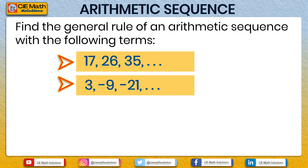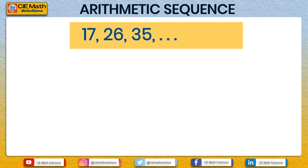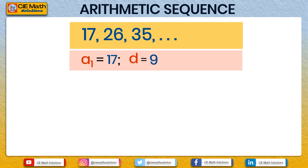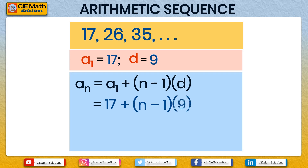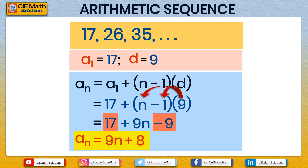Let us verify the answers. For the first sequence, the first term is 17, and the common difference is 9 (from 35 minus 26 or 26 minus 17). The general rule is AN equals 17 plus (N minus 1) times 9. Expanding: 9N minus 9, then combining with 17: 17 minus 9 equals 8. Therefore, the general rule is AN equals 9N plus 8.